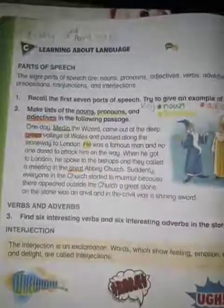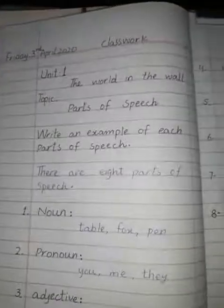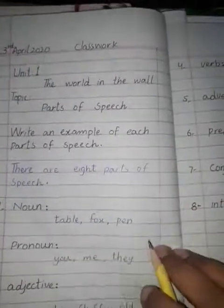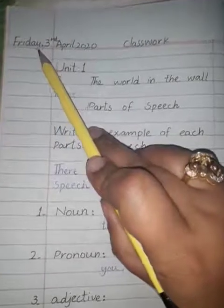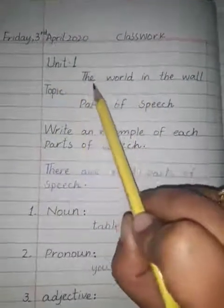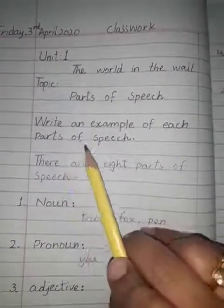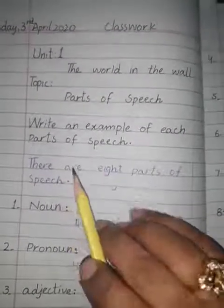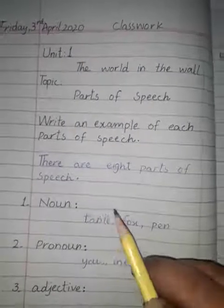Recall the first seven parts of speech and try to give an example of each. We are going to attempt this question in our notebook. Let me show you how to prepare your notebook. You will start by drawing a margin line first — it should be straight — then mention the day and date. You have to follow the format. We are writing more than one example here for better learning.